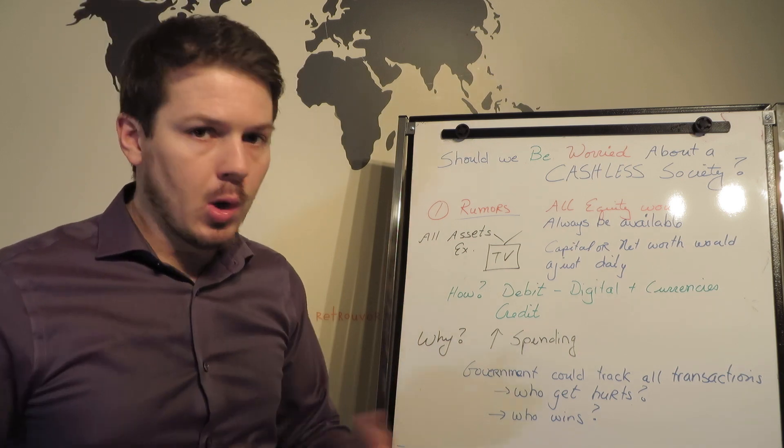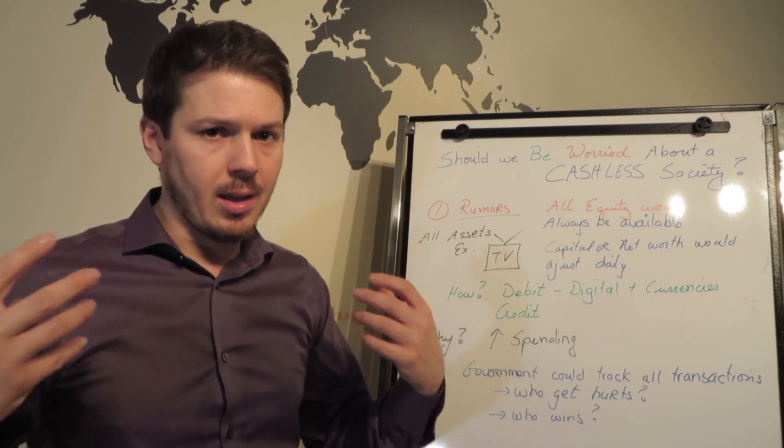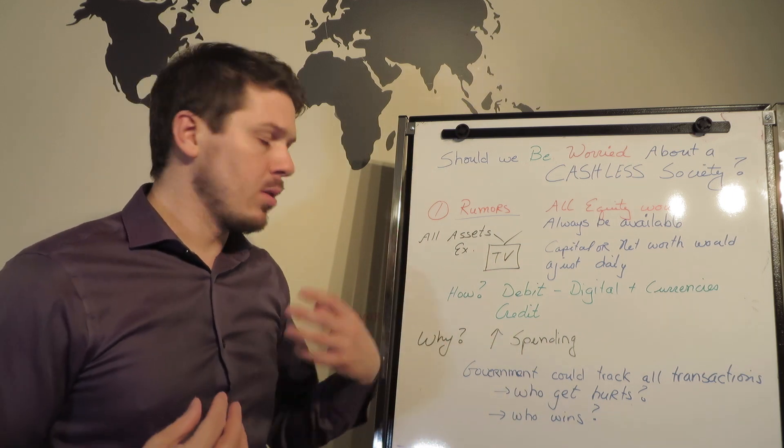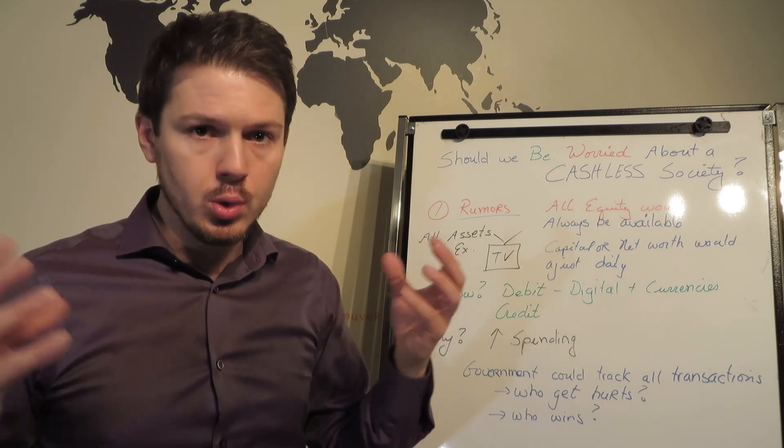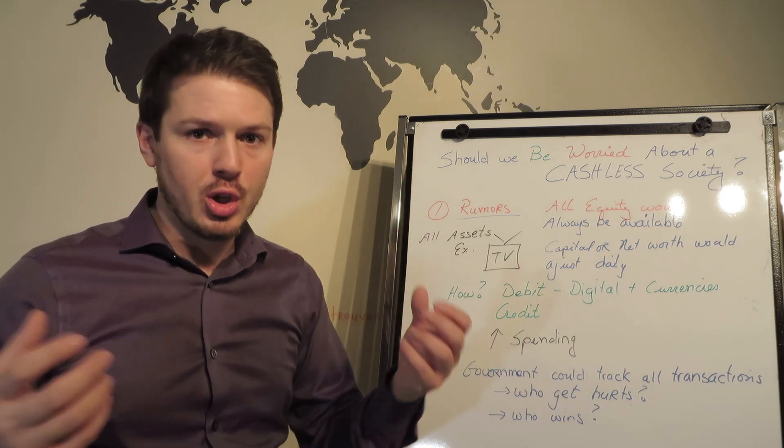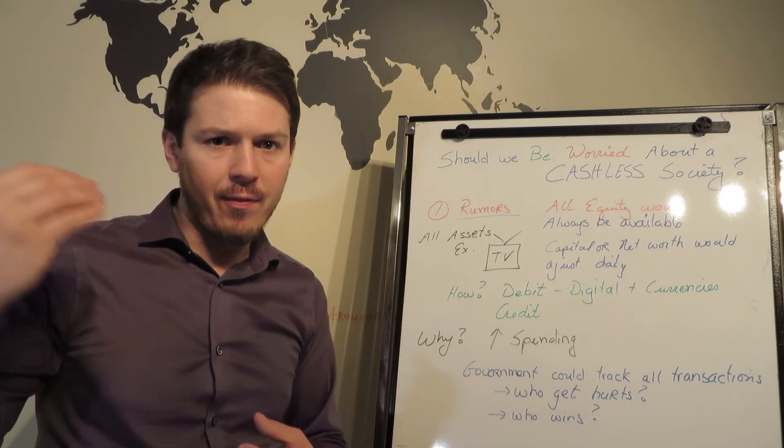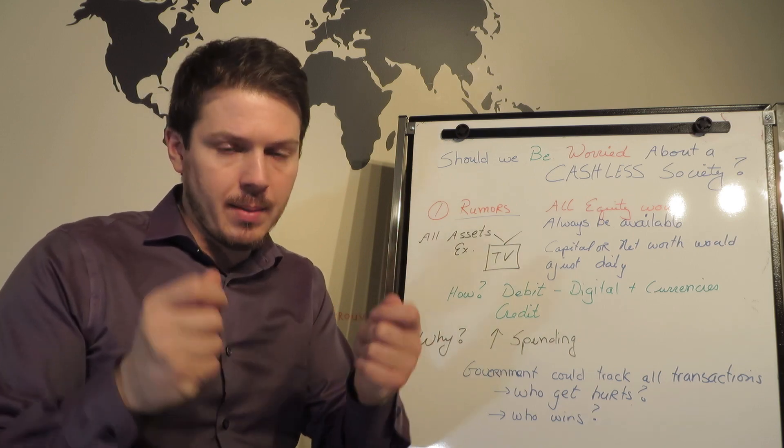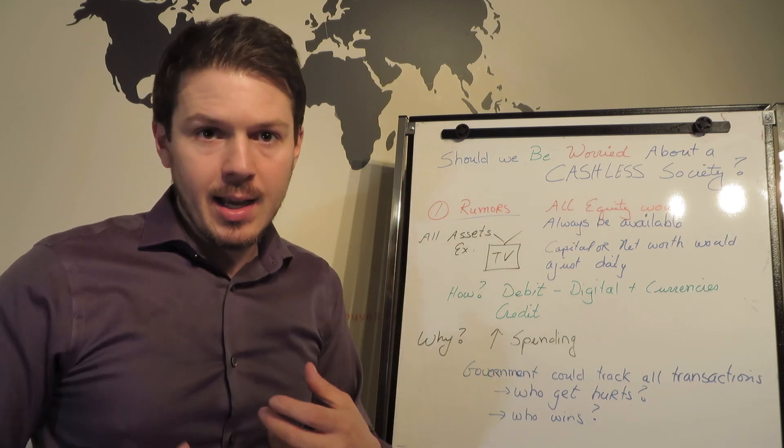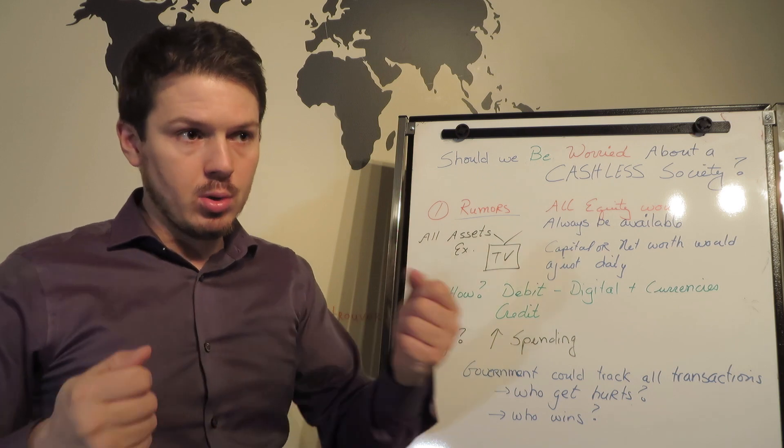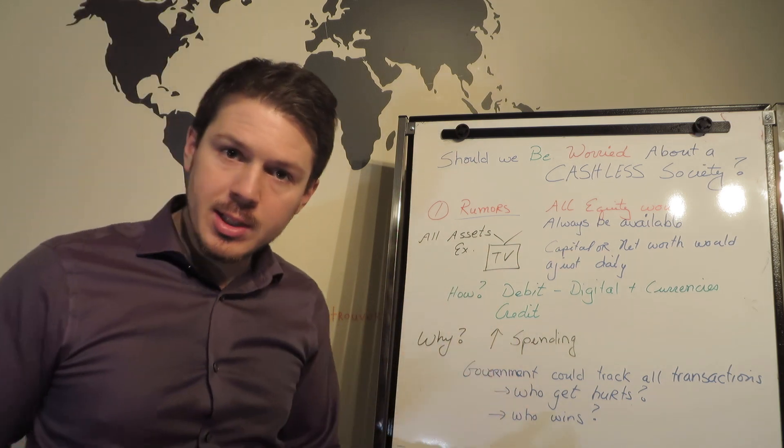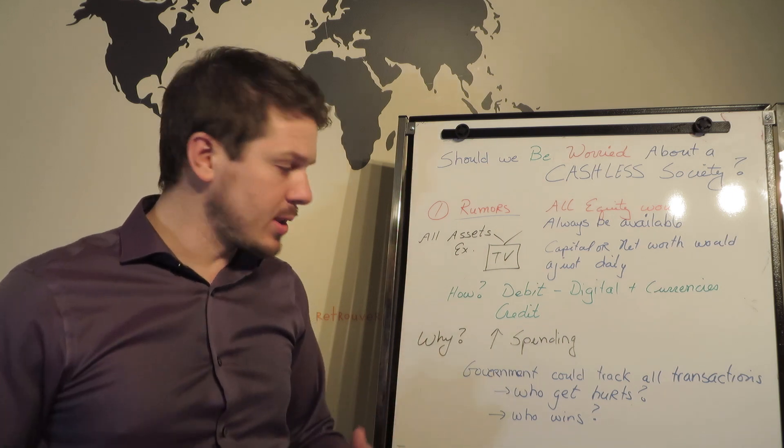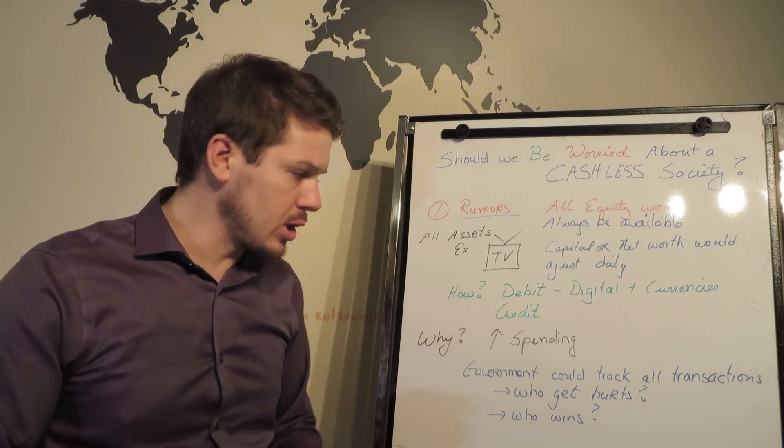Now, how are we going to do this? It's going to be something that's smart. A digital currency, it could be through your debit, your credit, or a total new currency that will be able to track everything. Or you will have a face value on a dollar. It's going to be something that's smart and you could see the value fluctuate in time. Why? Increase spending, accelerate the whole system.